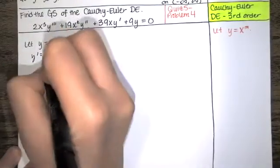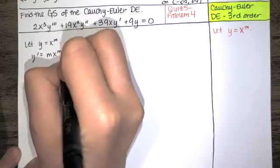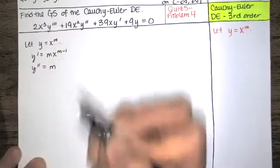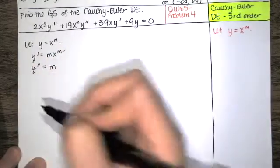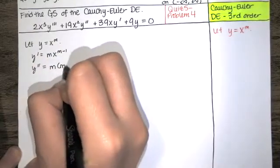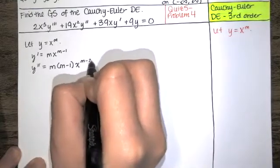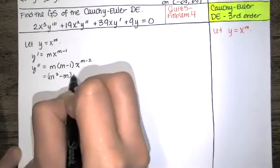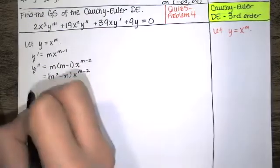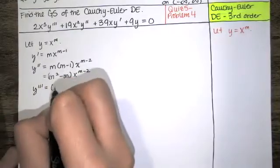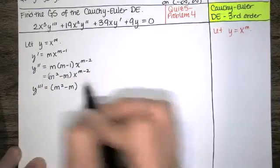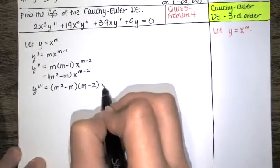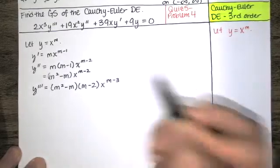The first derivative, according to the power rule, is m times x to the one less power. The second derivative comes from bringing that constant down and then applying the power rule again — you bring the power down and multiply by x to the one less power. For the third derivative, you bring the constant down, bring the power down, and multiply by x to the one less power. We're just applying the power rule three times.